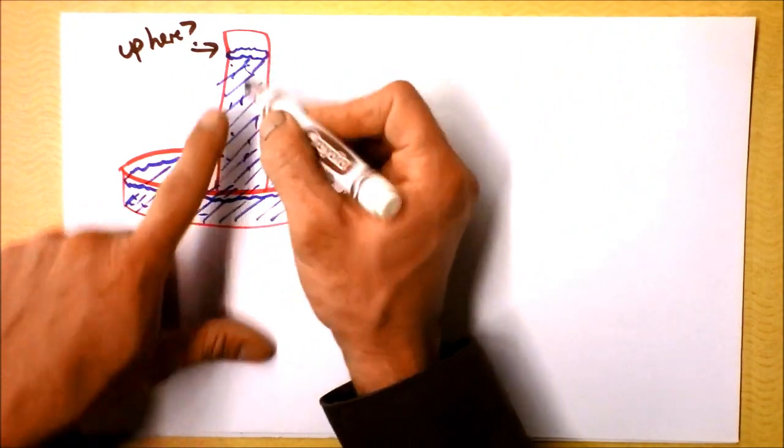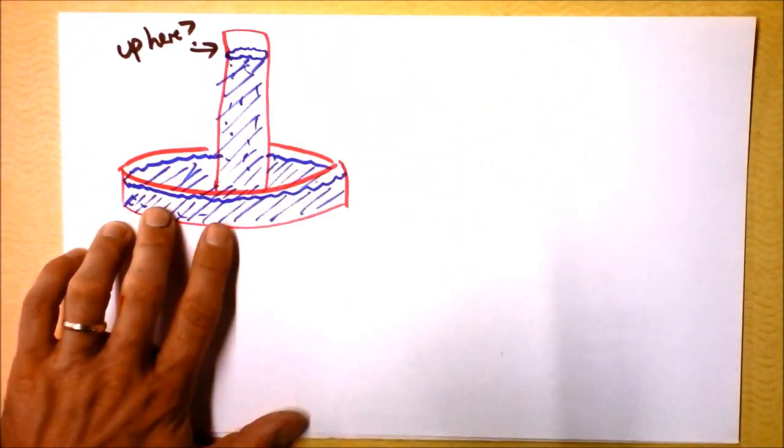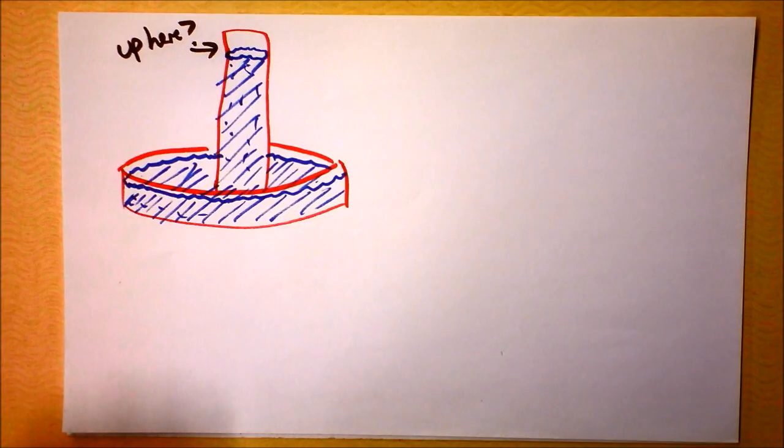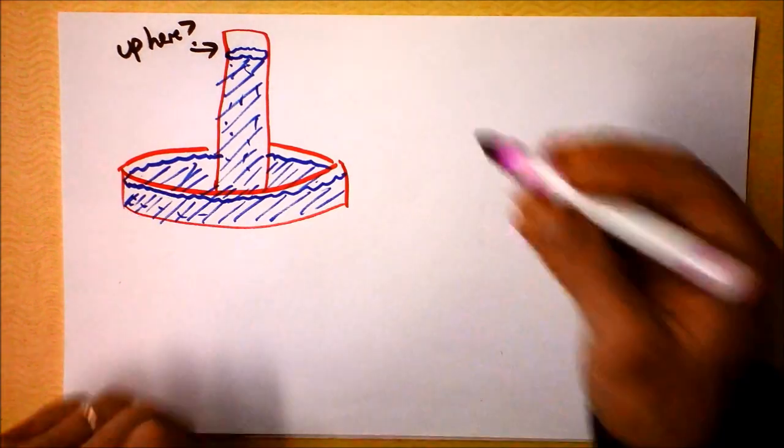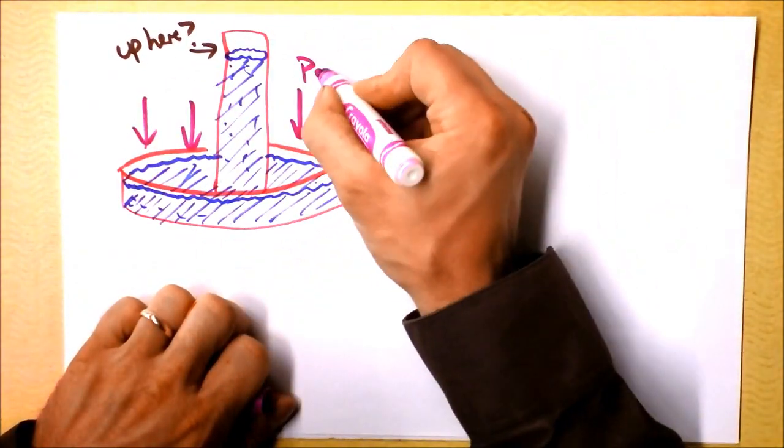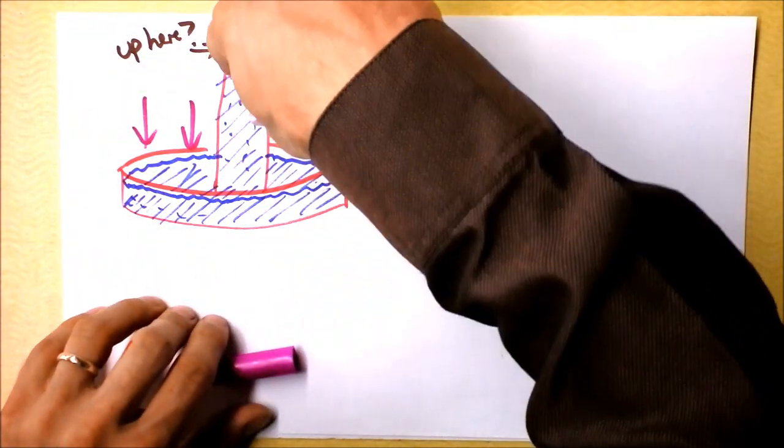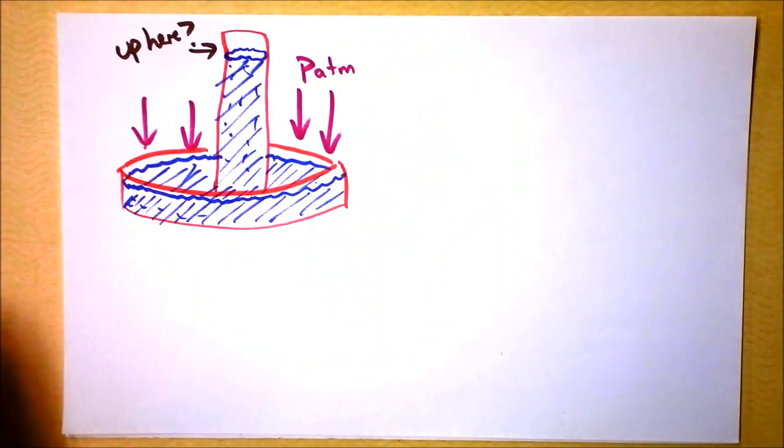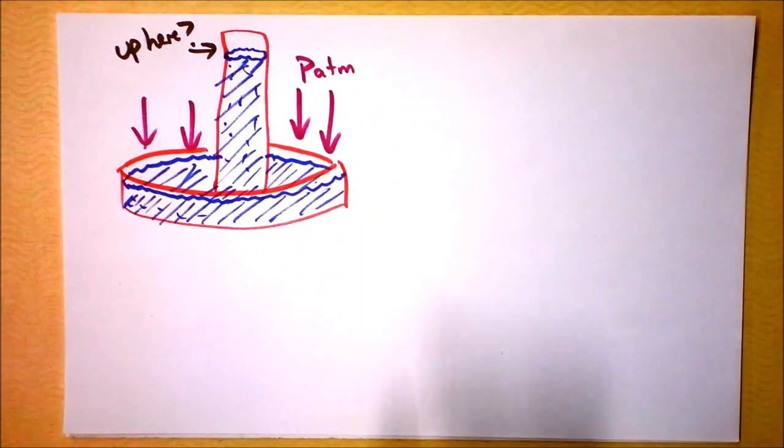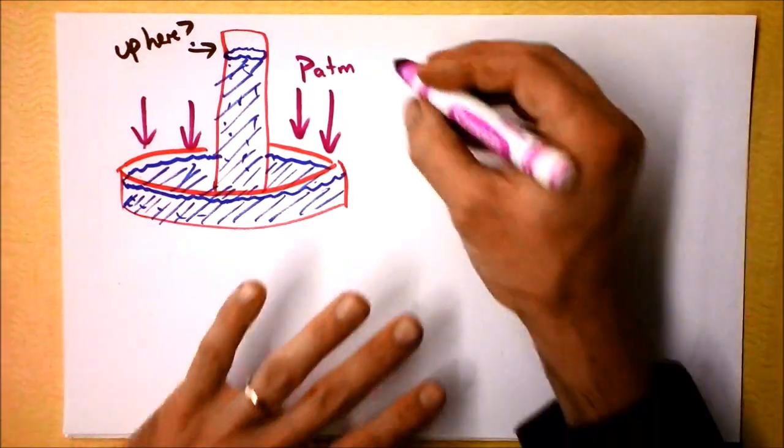And the question for you is, why doesn't the mercury all run out? It would certainly decrease its gravitational potential to run out of there. But it doesn't, and I'll tell you why. The only reason it doesn't run out is because the atmosphere is pushing down on it out here. The atmosphere is pushing down on this surface out here, which prevents this fluid from leaving and spilling out the bowl. If you took this into space, the mercury would all float out. But the fact is, the atmosphere is causing it not to be there. This is a barometer.